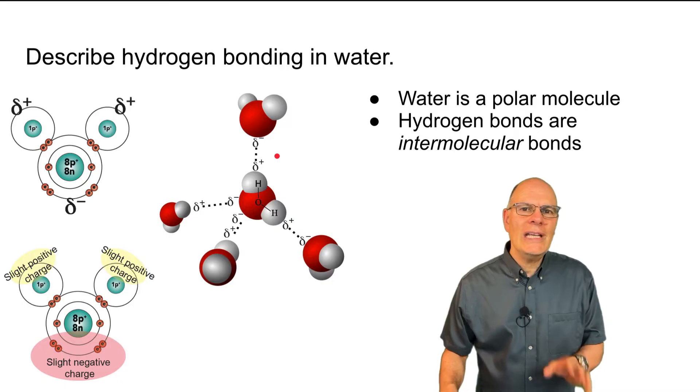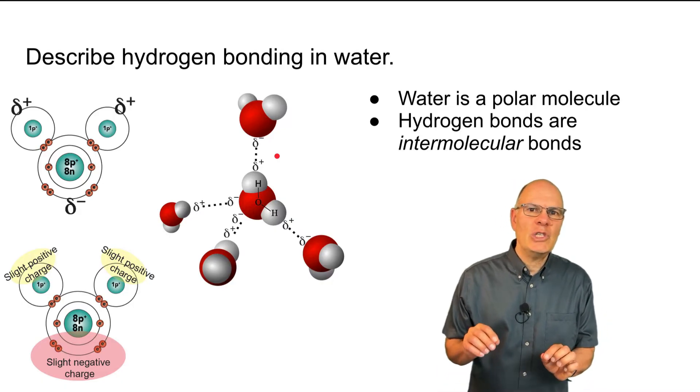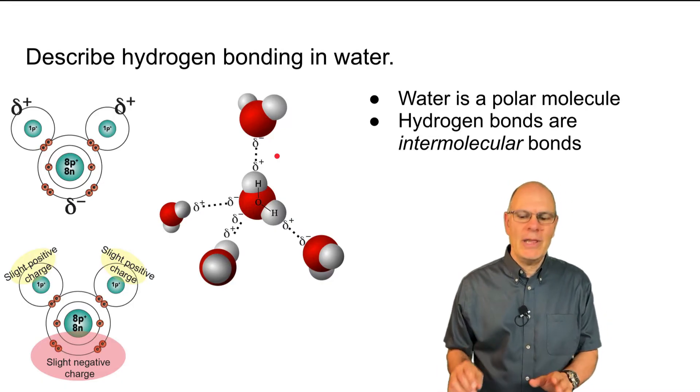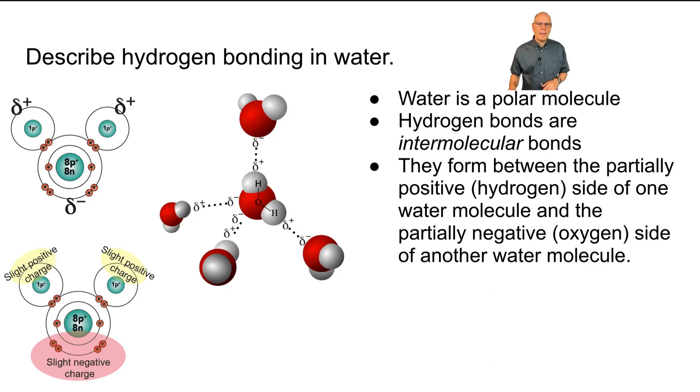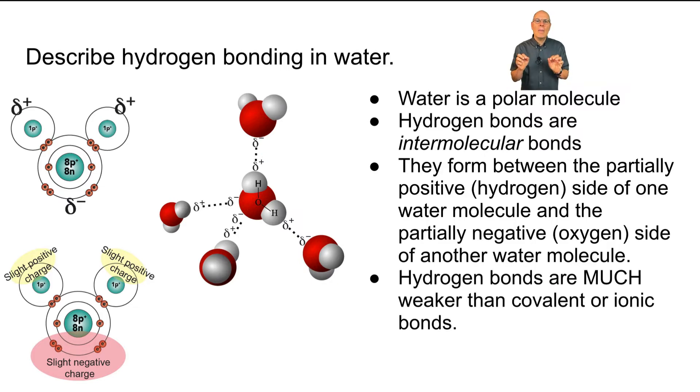Note that hydrogen bonds are intermolecular bonds. They're between molecules, not within molecules like covalent bonds or ionic bonds. So what's happening is that the oxygen is partially negative, the hydrogen is partially positive, and the hydrogen bond is a weak bond that forms between those two areas. Hydrogen bonds are much weaker than covalent bonds, ionic bonds, any of those intramolecular bonds.